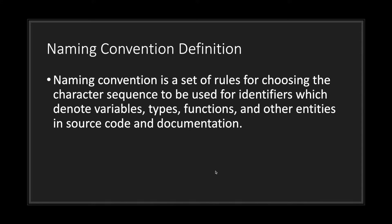Naming conventions are a set of rules for choosing the character sequence to be used for identifiers which denote variables, types, functions, and other entities in source code and documentation.